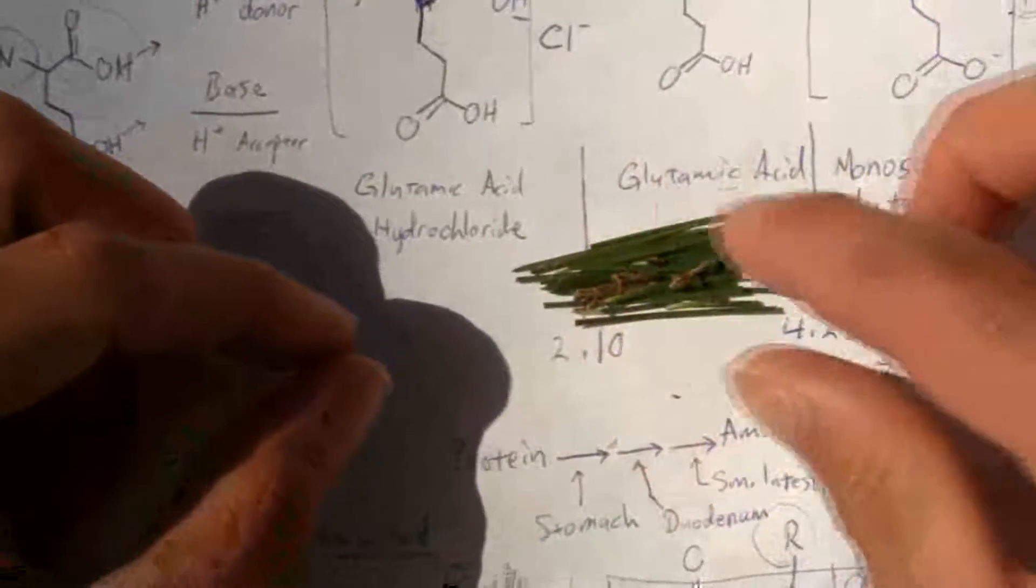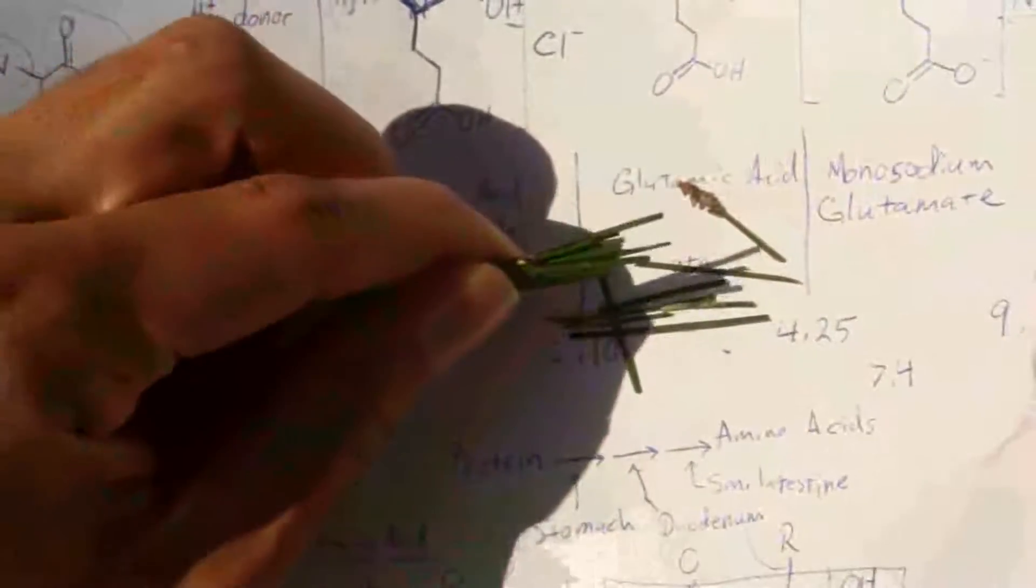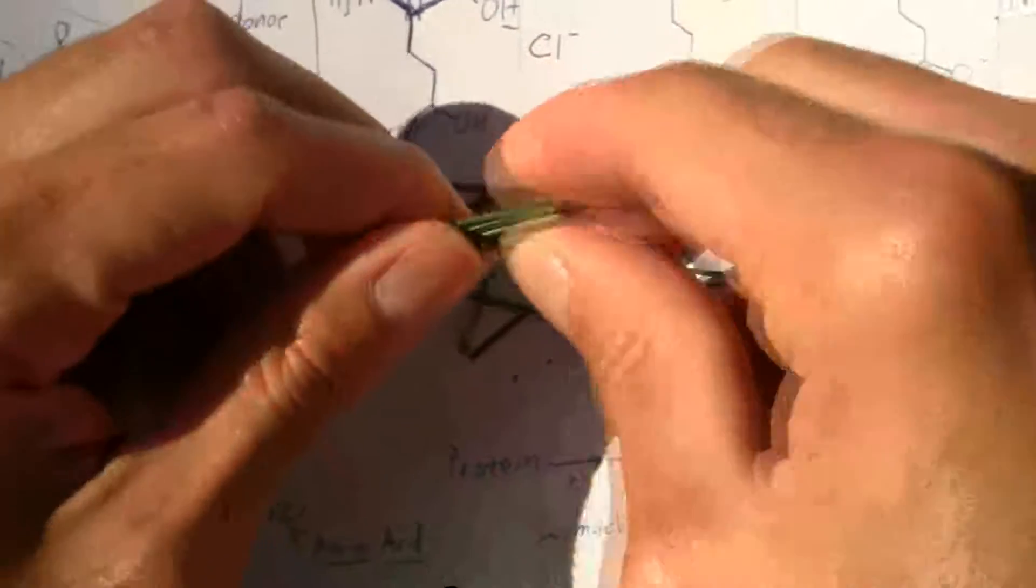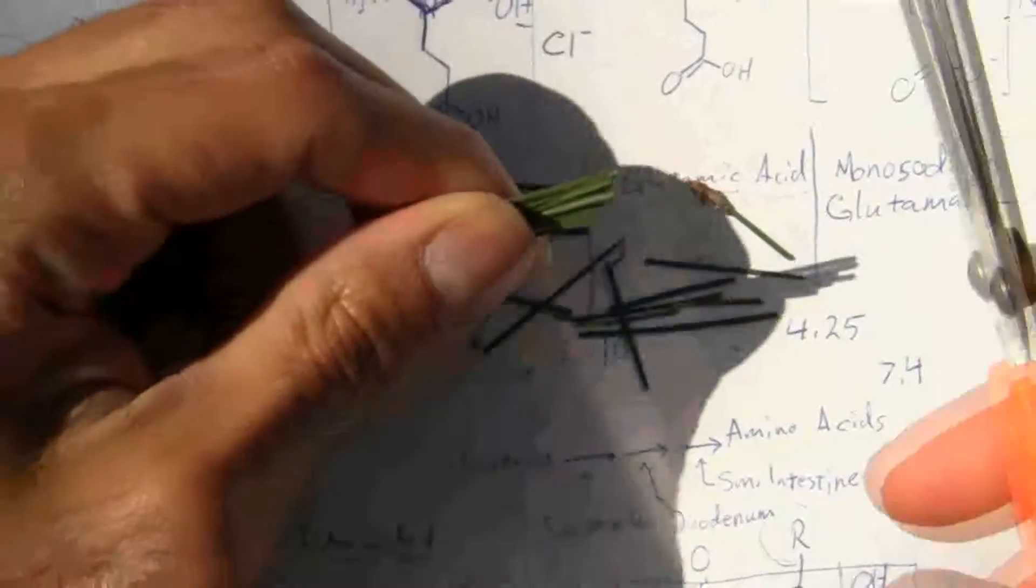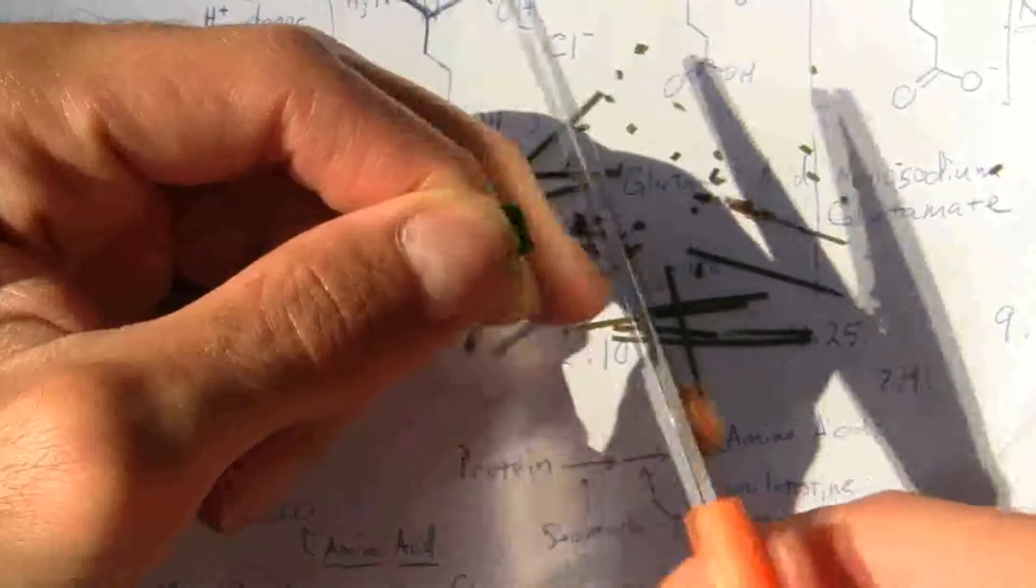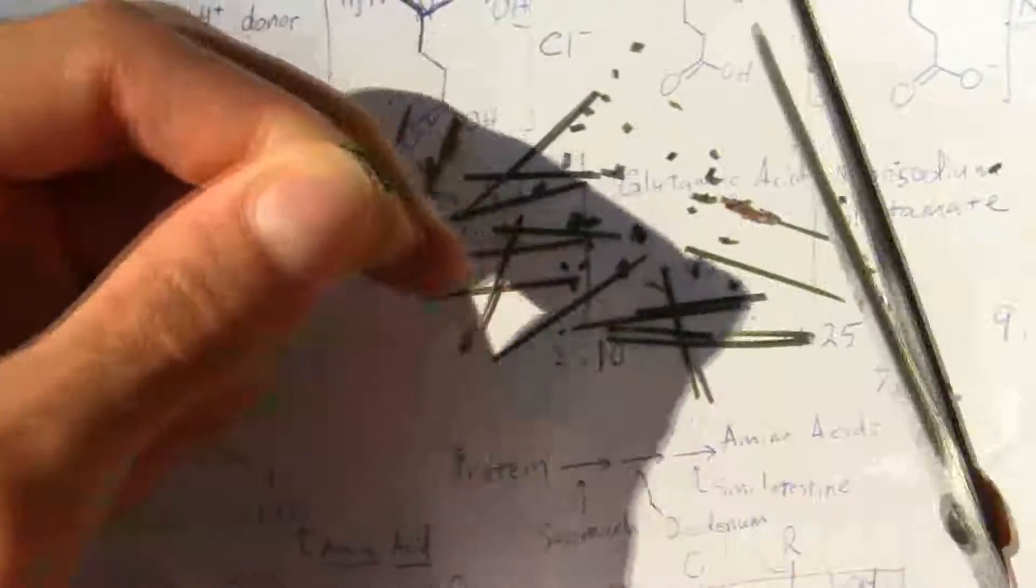They're not free amino acids. You get this in the duodenum, and it goes down there, and with the help of another enzyme called trypsin and chymotrypsin, then it starts to break them down into the individual amino acids.